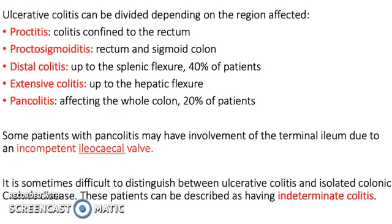UC can be divided depending on the region affected: proctitis, confined to the rectum; proctosigmoiditis, rectum and sigmoid; distal colitis, up to the splenic flexure; extensive colitis, up to the hepatic flexure; and pancolitis, affecting the whole colon. Some patients with pancolitis may have involvement of the terminal ileum due to incompetence of the ileocecal valve, making it difficult to distinguish between UC and isolated Crohn's disease. These patients can be described as having indeterminate colitis.